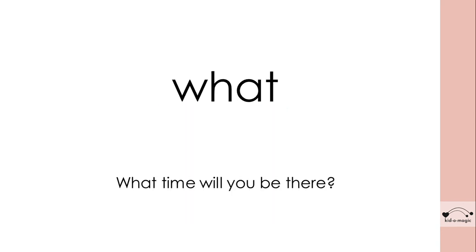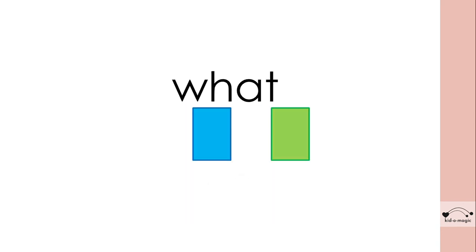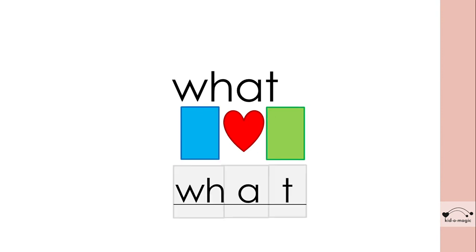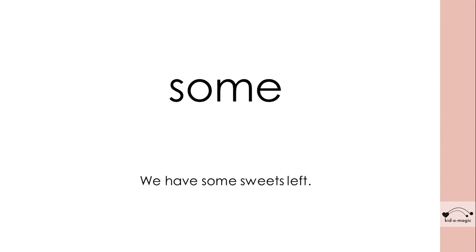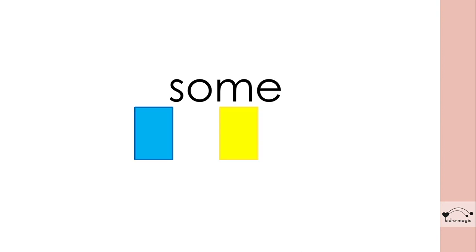'What' — used in the sentence: What time will you be there? W and T have their normal sounds, whereas A has a sound of O. W, O, T. 'Some' — used in the sentence: We have some sweets left. S and M have their normal sounds, while O and E are the tricky ones. Some.